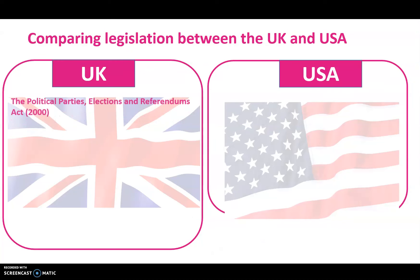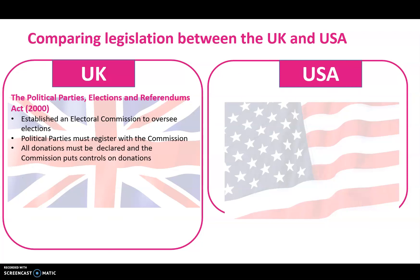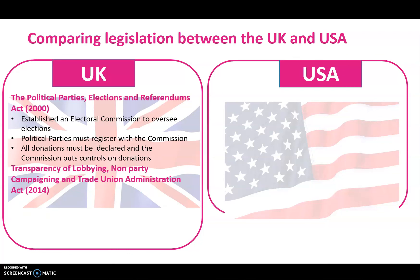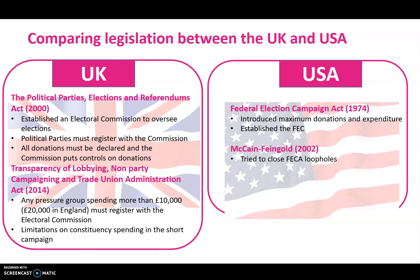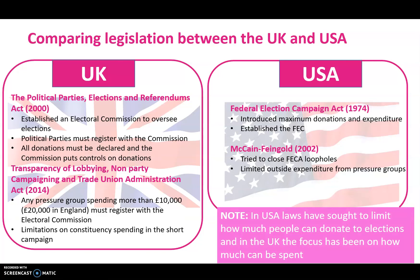Just to compare legislation: in the UK, in 2000 the Blair government passed the Political Party Elections and Referendums Act, which established an Electoral Commission and required parties to register donations. In 2014, the Cameron government passed the Transparency of Lobbying, Non-Party Campaigning and Trade Union Administration Act, which tried to limit pressure group spending. The focus of UK legislation is very much on restricting how much you can spend. Whereas in the USA, the main focus has been on trying to restrict how much you can donate — a subtle difference in emphasis between the two countries.